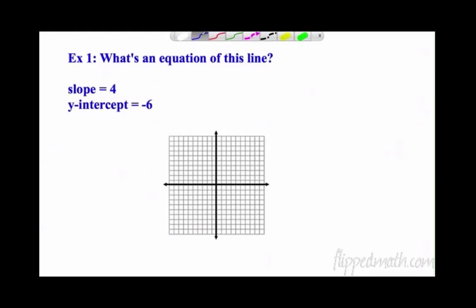Let's look at our first example. Here we go. We have, what's the equation of this line? Slope is 4, y-intercept. So this is m, this is b. Plug it into y equals mx plus b. So m is 4, 4x plus my b, negative 6.